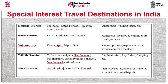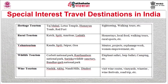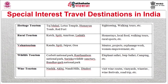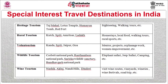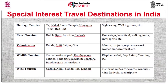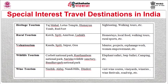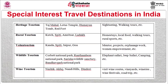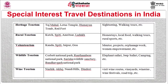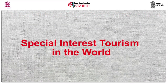For volunteerism in India, Kanda, Spiti, Jaipur, and Goa are famous destinations where tourists can engage in orphanage work, women's empowerment, and rural empowerment activities. For wildlife tourism, Corbett National Park, Ranthambore National Park, Sariska Wildlife Sanctuary, Bandhavgarh National Park, and many other national parks are famous. For wine tourism in India, Nasik, Nandi Hills, Akluj, and Dindori are the notable destinations.